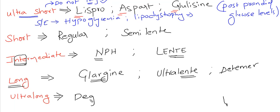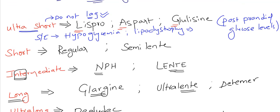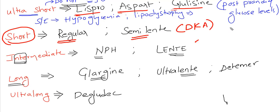The only thing remaining is ultra long, and this is degludec. Degludec is the ultra long acting insulin. Lispro, aspart, and glulisine are ultra short acting. Short acting are regular and semi lente, and this is used in diabetic ketoacidosis in IV form.